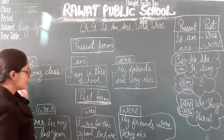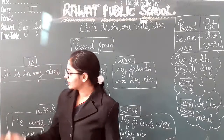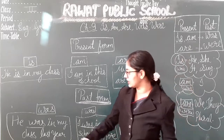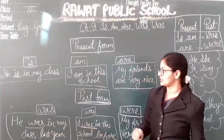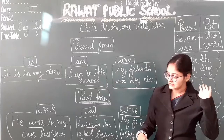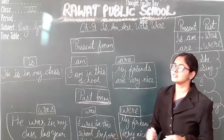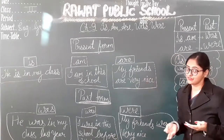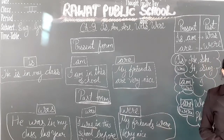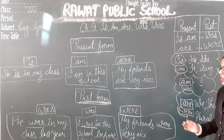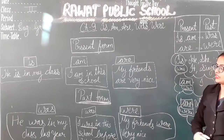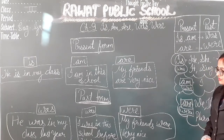Let's recap. Present: He is in my class. Past: He was in my class. Present: I am in this school. Past: I was in this school. Present: My friends are very nice. Past: My friends were very nice. I hope all of you understand the use of is and are, was and were.